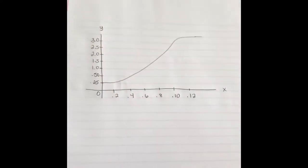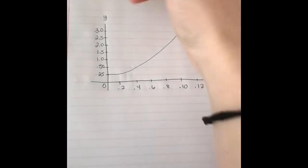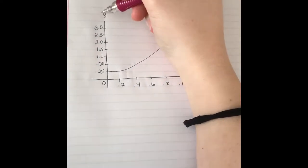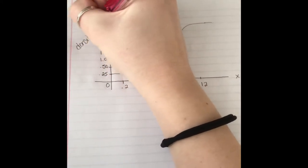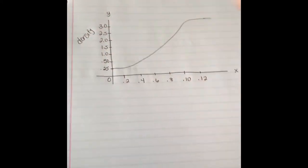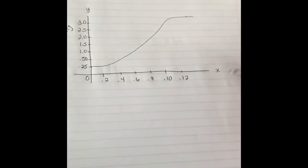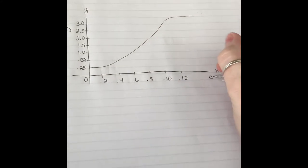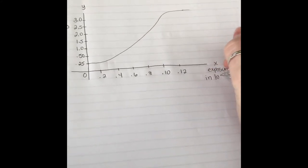Now I will draw you an example. This is what a characteristic curve looks like. Over here is the y-axis, which is the density, and over here is the x-axis, which is the exposure in logarithms.